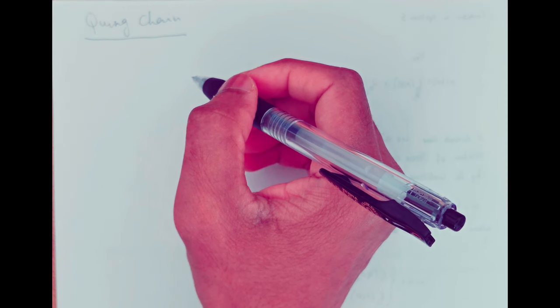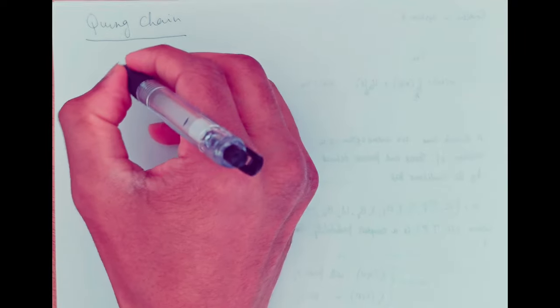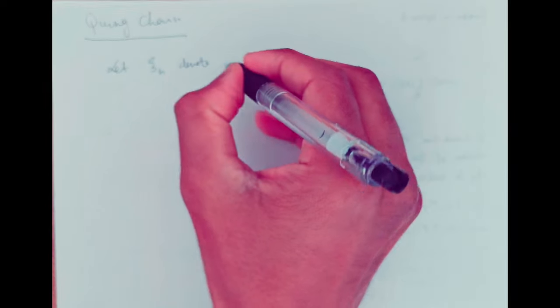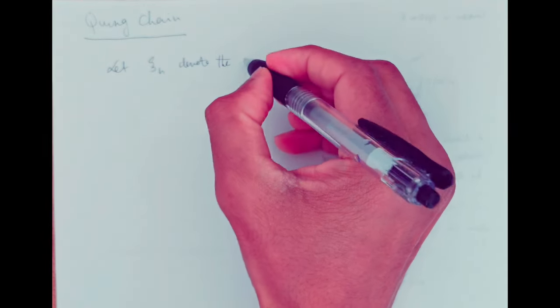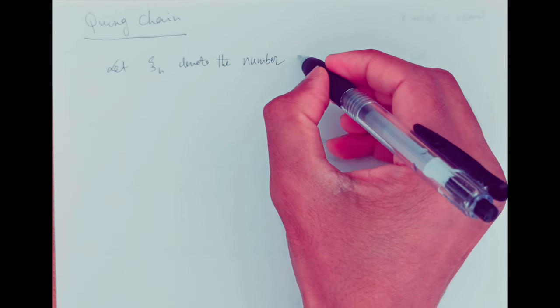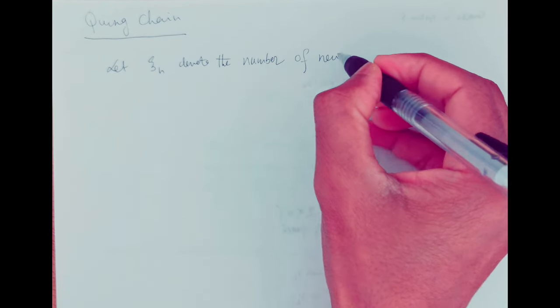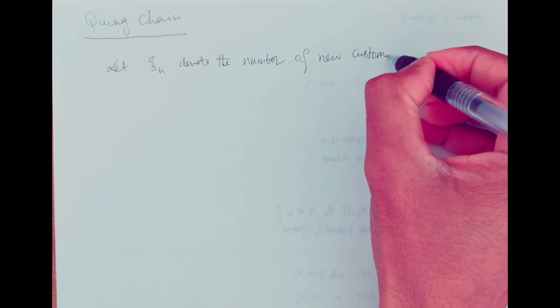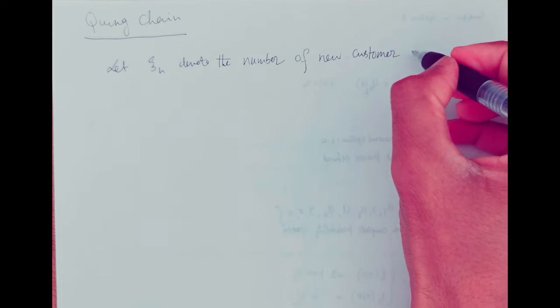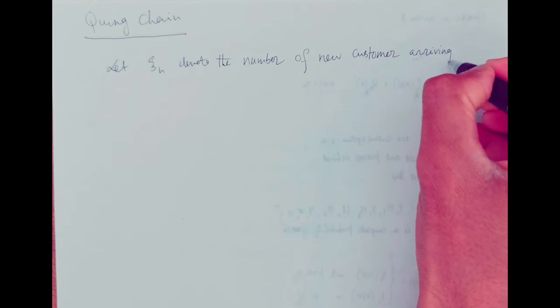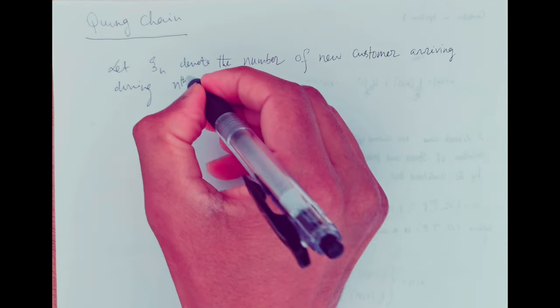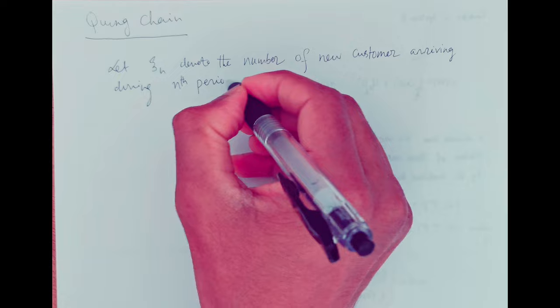Let xi_n denote the number of new customers arriving during the nth period.